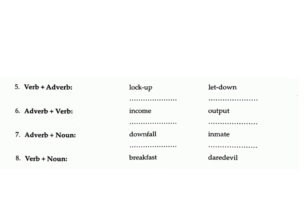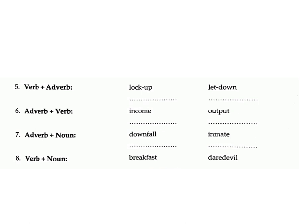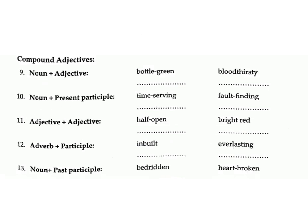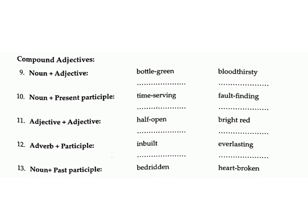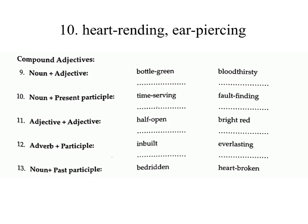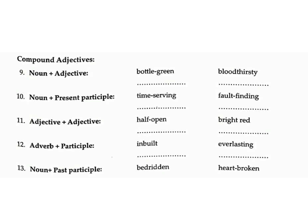7. Adverb plus noun: downfall, inmate – answers: inside, outlaw. 8. Verb plus noun: breakfast, daredevil – answers: spendthrift, pickpocket. Compound adjectives. 9. Noun plus adjective: bottle green, bloodthirsty – answers: sky blue, headstrong. 10. Noun plus present participle: time-serving, fault-finding – answers: heart-rending, ear-piercing.